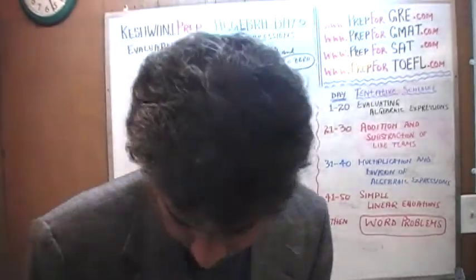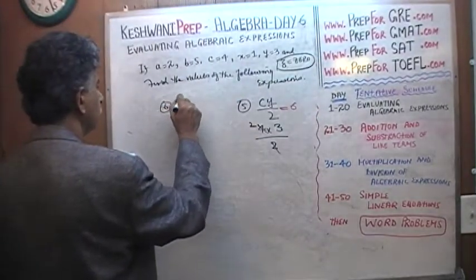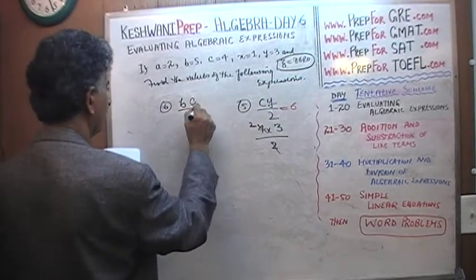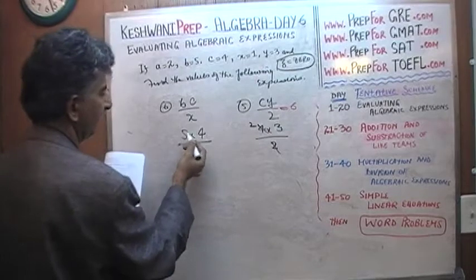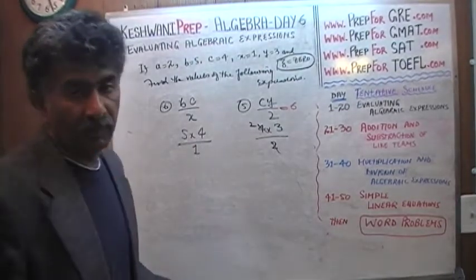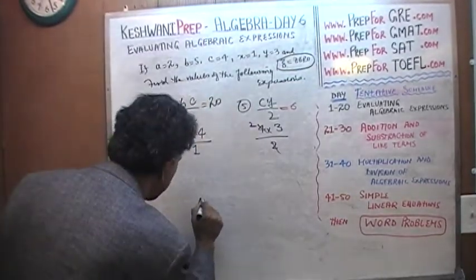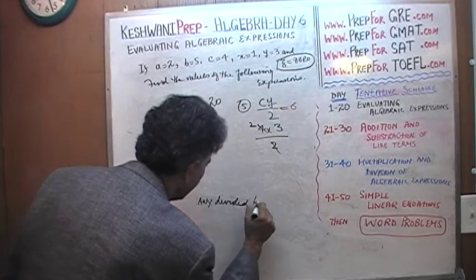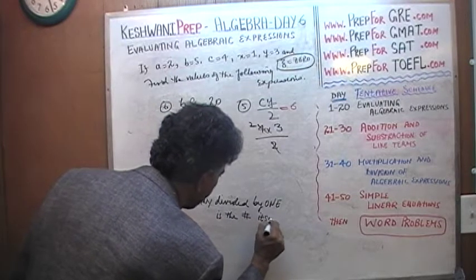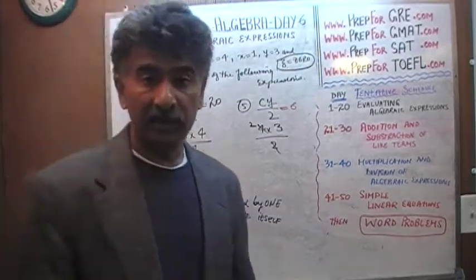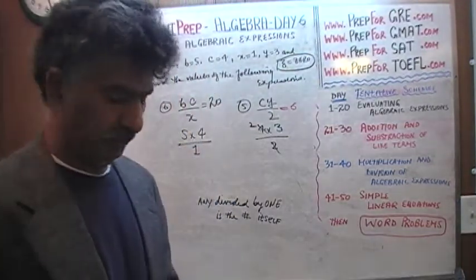Let's go to number 6. B times C over X. 5 times C which is 4 over X which is 1. As you can see, 5 times 4 is 20, 20 over 1, 20 divided by 1. Any number divided by 1 is the number itself. So it's just 20. Similarly, any number multiplied by 1 is the number itself. 7 times 1 is 7, 13 times 1 is 13. I was about to say 7, but 13 times 1 is not 7.